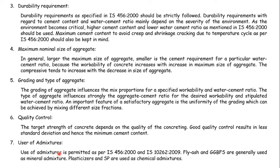The sixth factor is use of admixtures. The use of admixtures is permitted as per IS 456 and IS 10262. Fly ash and GGBFS are generally used as mineral admixtures. Plasticizers and super plasticizers are used as chemical admixtures. Mineral admixtures are generally used to alter the quantity of either cement or fine aggregate, and chemical admixtures are used to alter the workability — that is the water quantity of the concrete.